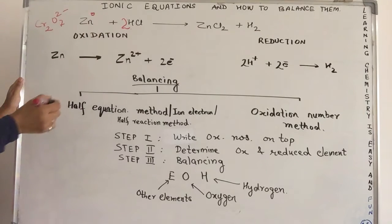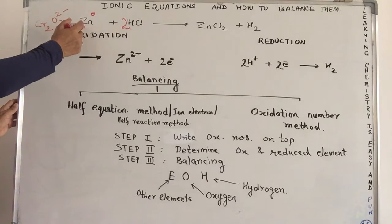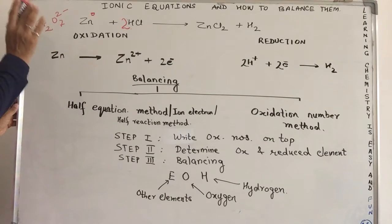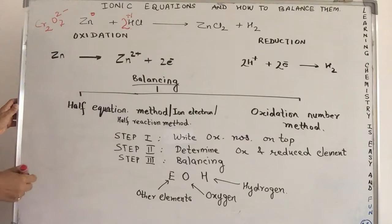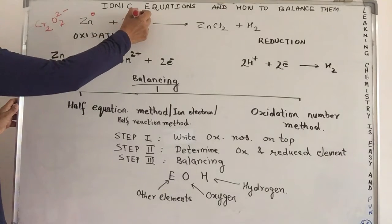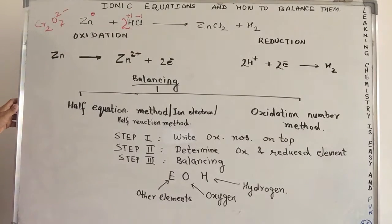Now, zinc, again we shall go back to the rules that we have done under the heading oxidation number. It is an element, zinc oxidation state 0, hydrogen oxidation state plus 1,